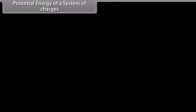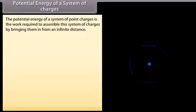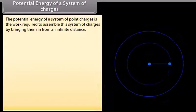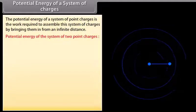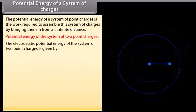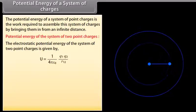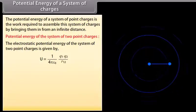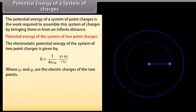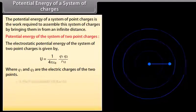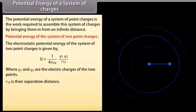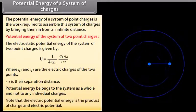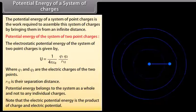Potential energy of a system of charges: The potential energy is the work required to assemble the system by bringing the charges in from infinite distance. For two point charges, the electrostatic potential energy is given by U equals 1 upon 4π ε₀ multiplied by Q1 Q2 upon R12, where Q1 and Q2 are the charges and R12 is their separation distance. Potential energy belongs to the system as a whole, not to any individual charge. The electric potential energy is the product of charge and electric potential.